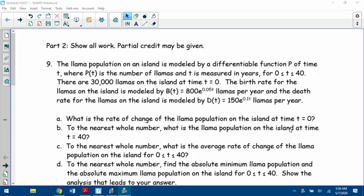Alright, here's a quick explanation of the last question on the quiz for you, the llama question. Llama population on an island is modeled by a differentiable function P of time t, where P(t) is the number of llamas and t is measured in years between 0 and 40. There are 30,000 llamas on the island when t equals 0. The birth rate for the llamas is modeled by B(t), and the death rate is modeled by D(t).